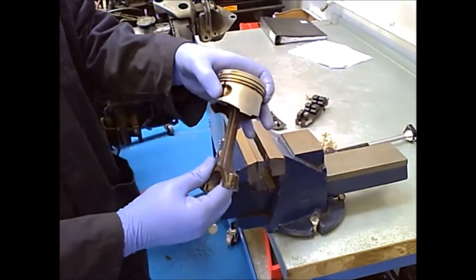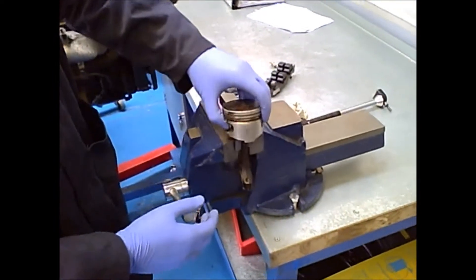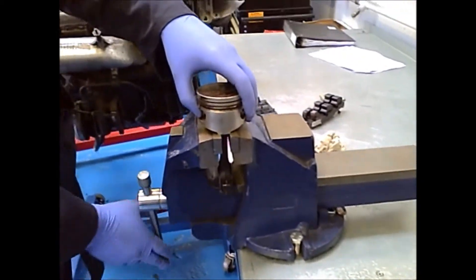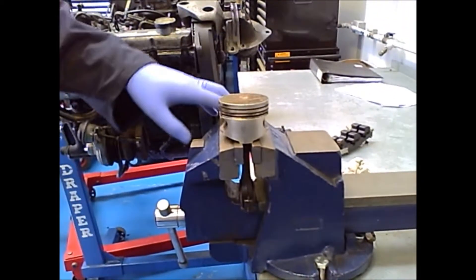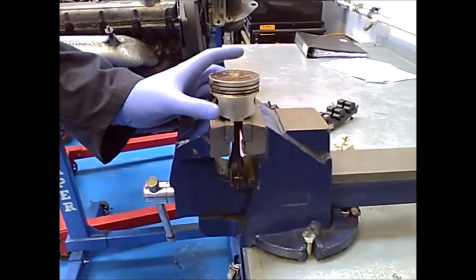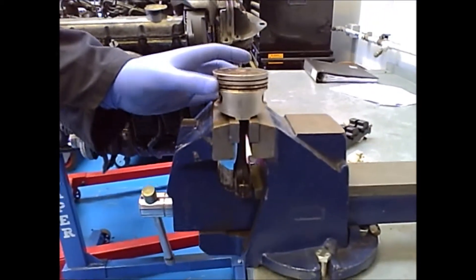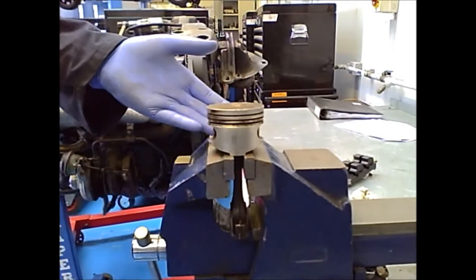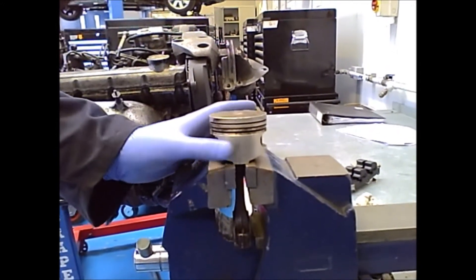First of all, you must remove the piston from the engine and place it into a suitable gripping device such as this one. This is so you can measure the width of the piston using a micrometer. The area that you will be measuring is the piston skirt. This is because it is the widest part of the piston.